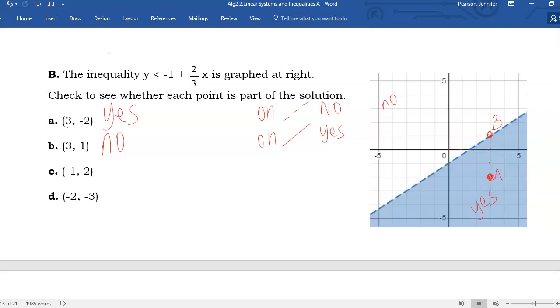C is negative 1, 2 from the origin, 1 left, 2 up. That is definitely in the non-shaded region.